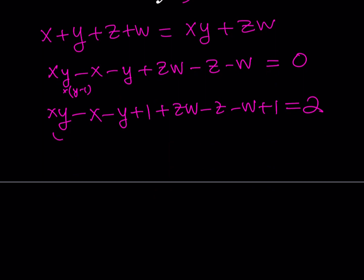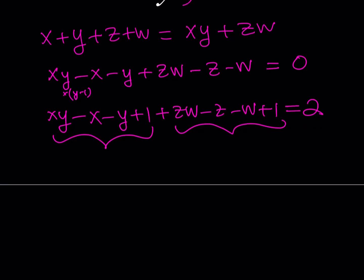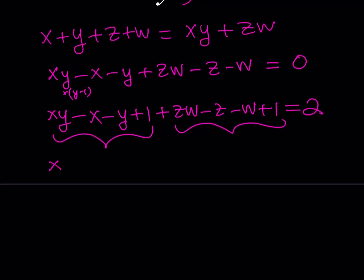Now what is so cool about this is that now you're getting factorable expressions, and that's going to look like, let's see how this could be simplified. You can go ahead and write it as x times the quantity (y minus 1), minus 1 times the quantity (y minus 1), and then something similar here, plus z times the quantity (w minus 1), and minus 1 times (w minus 1).